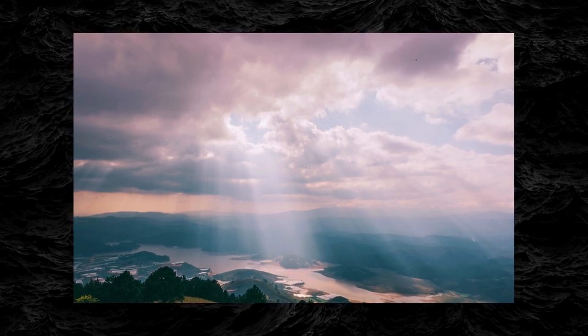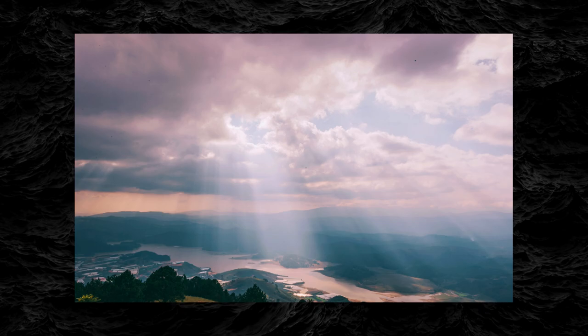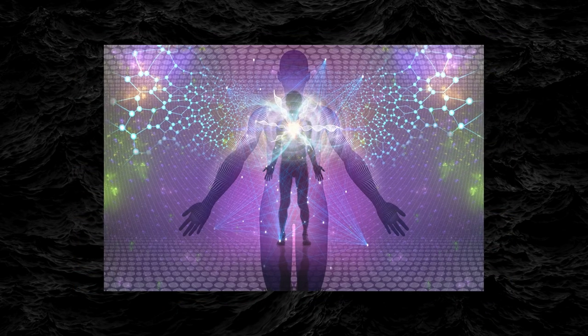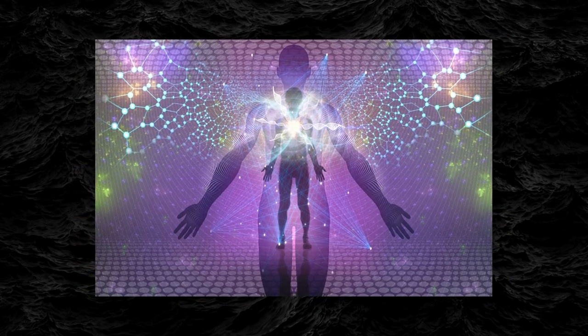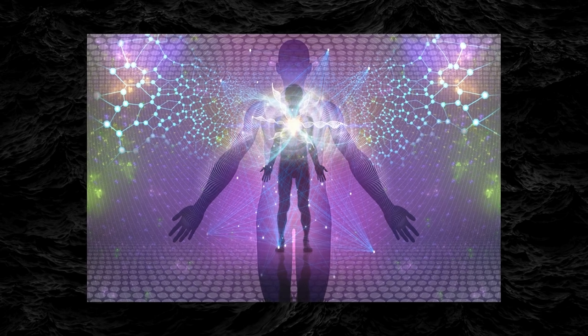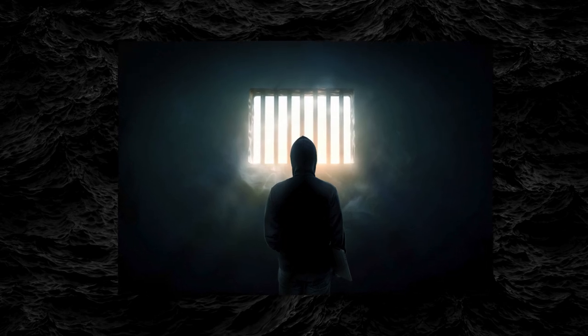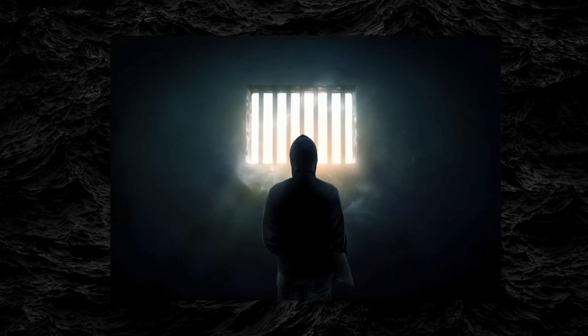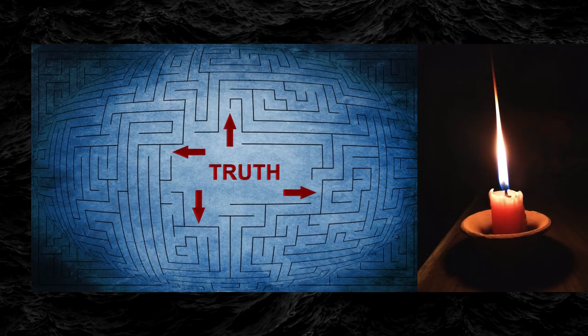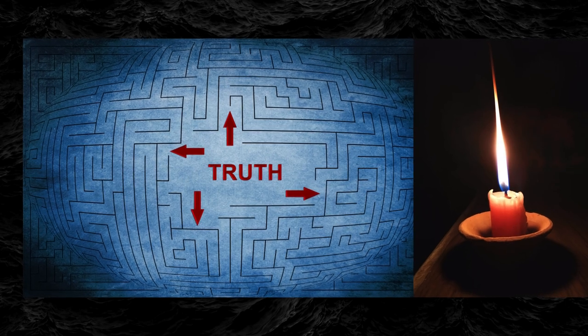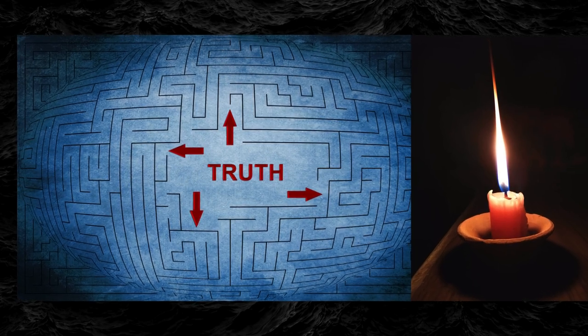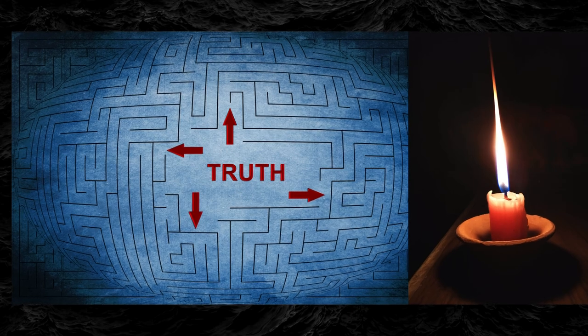they begin to see the world as it truly is, full of color, light, and depth. This is the moment of full enlightenment. The prisoner sees the sun, the source of all light and life. They now understand that the cave was a prison of ignorance, and that true knowledge comes from stepping out into the light. So, what does this mean for us? What is our light? What truths are we afraid to face because they challenge the shadows we've believed in for so long? And what would happen if we dared to leave our own caves?